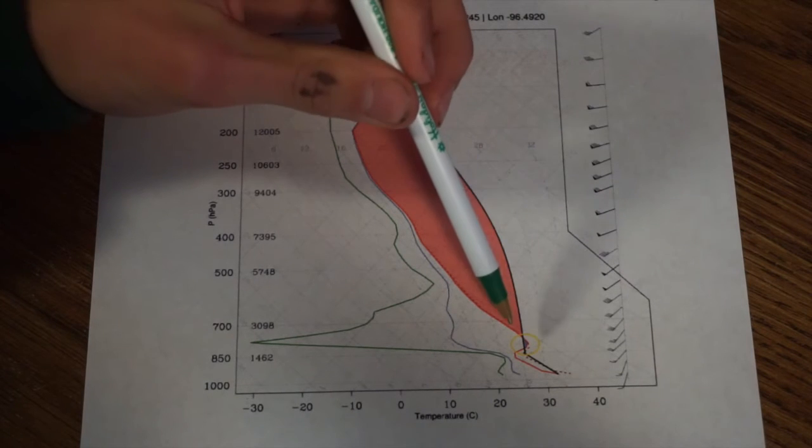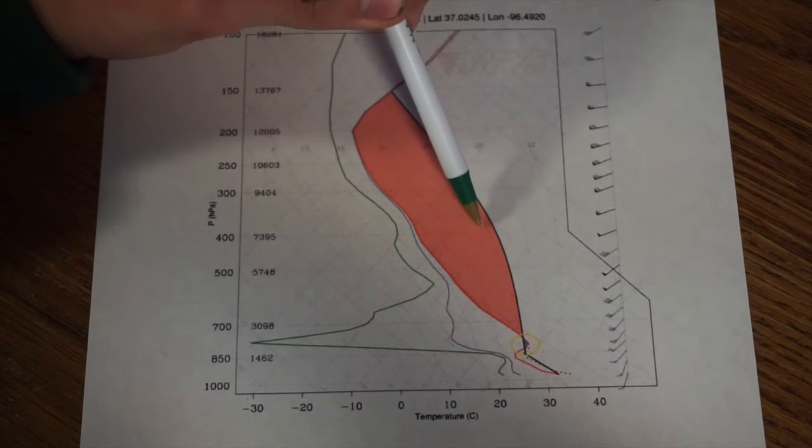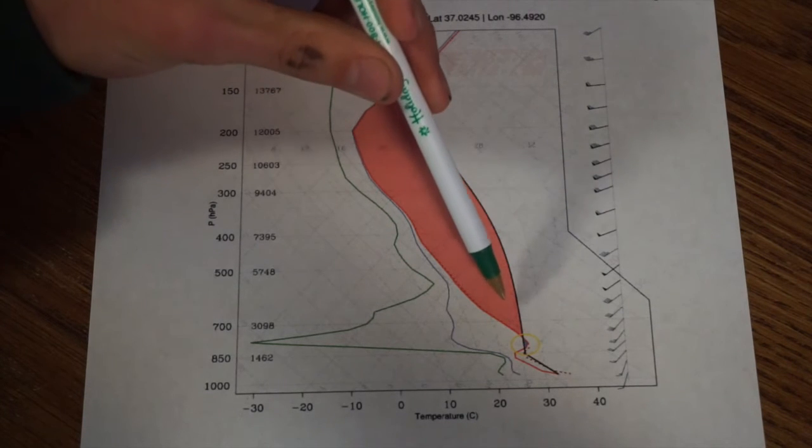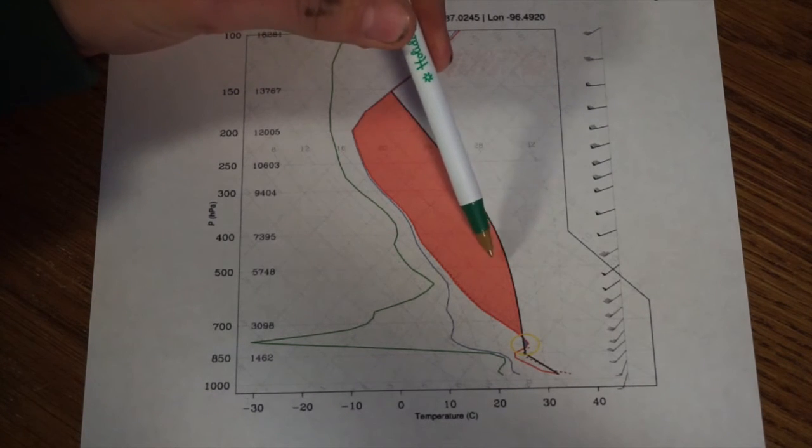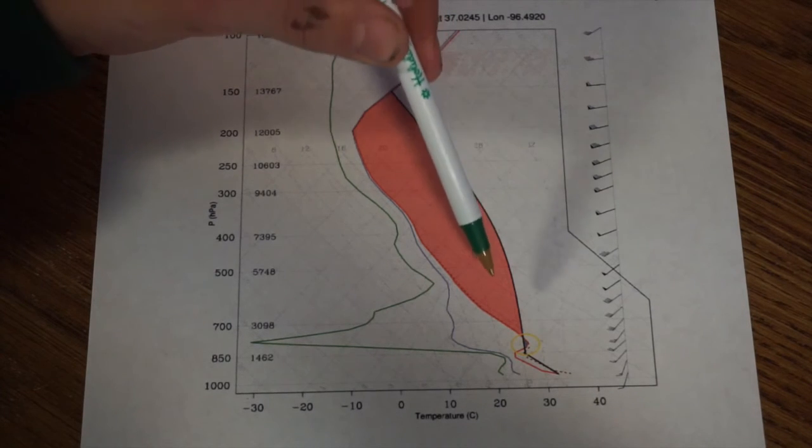The second thing is the difference from the lapse rate to the actual air temperature. Let me explain. If your actual air temperature ran just alongside your lapse rate, air will rise, but it's not a big difference, because this is what it takes for an air parcel to rise. If you're just to the left of it, it'll rise, but rise slowly.